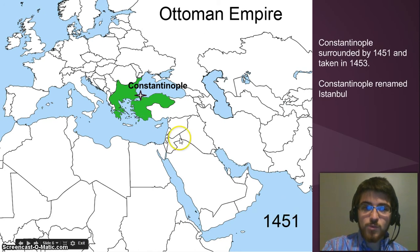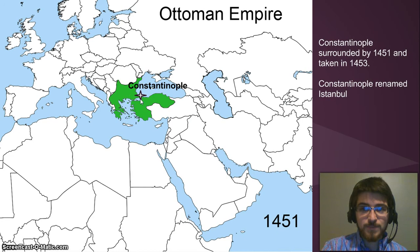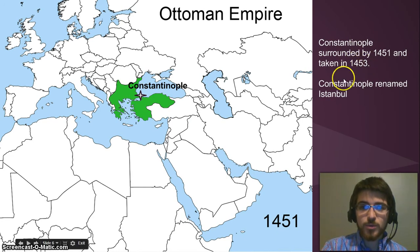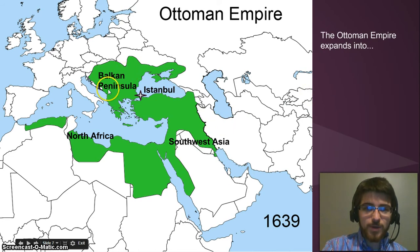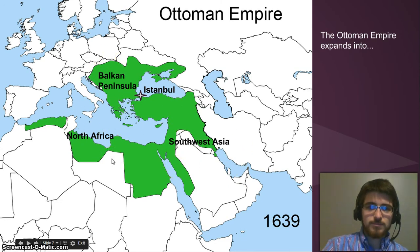In 1451 Constantinople was totally surrounded by the Ottoman Empire, shown in green here. The Byzantines still held the city but basically nothing else. And then by 1453 the Ottomans took Constantinople and renamed it Istanbul. By 1639 they had expanded into an enormous empire that covered all this territory including the Balkan Peninsula, Southwest Asia which is also called the Middle East, and North Africa. And you can see it's called Istanbul now — same city, same control of the trade routes, just a different name.